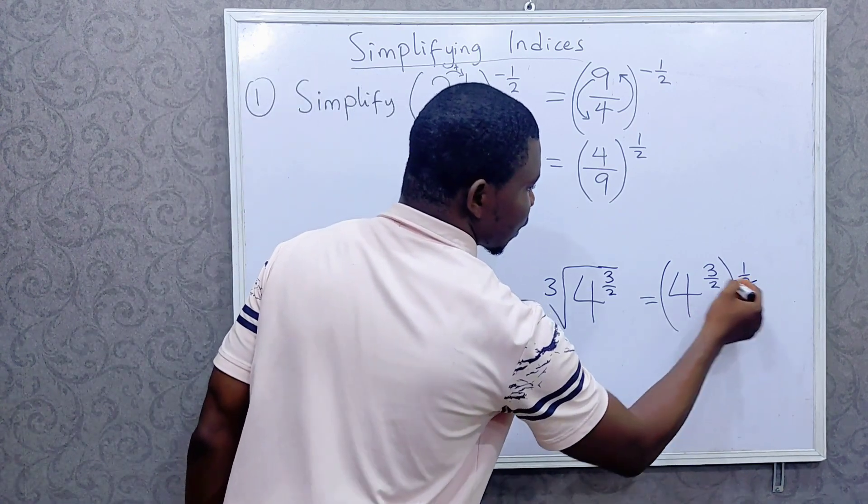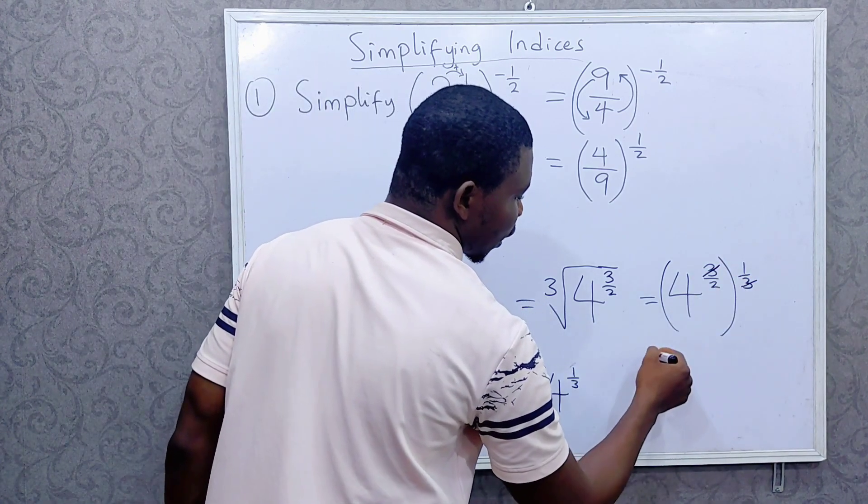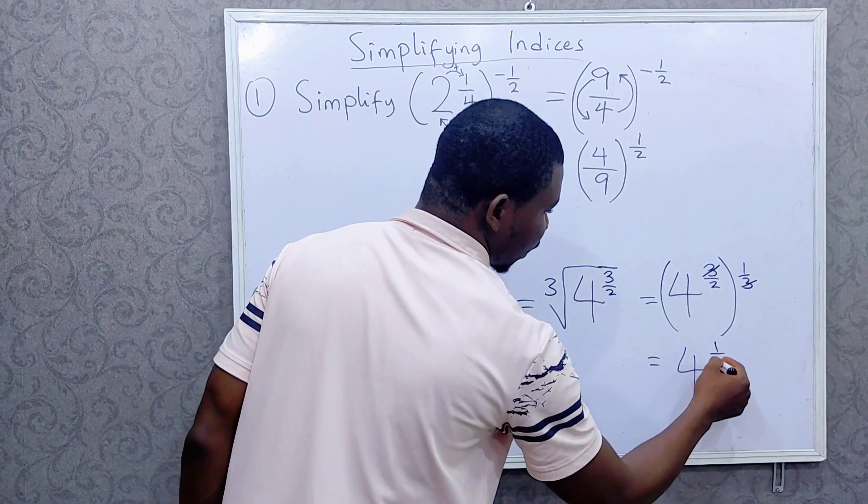Now, multiplying the powers 3, we cancel 3. And we have 4 raised to power 1 over 2.